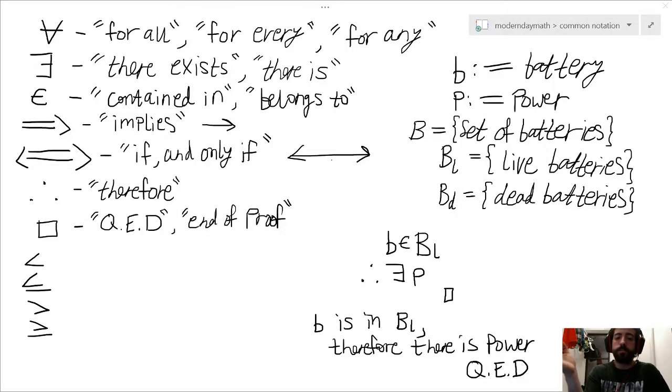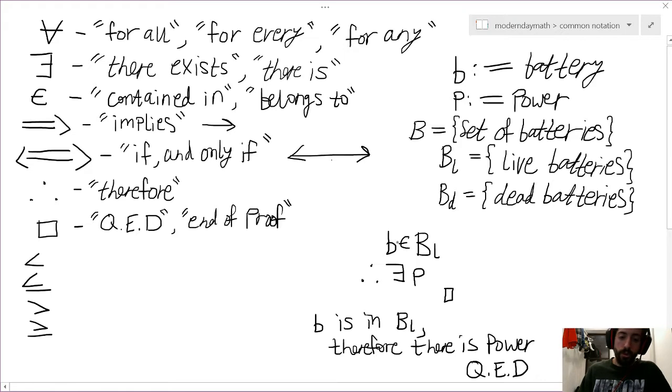Okay, so a nice symbol example using therefore and QED or end of proof would be the statement that reads: in symbols, b belongs to BL, therefore there exists p, which is the chosen battery belongs to the set of live batteries, therefore there is power. Right, there exists p power. And I wrote it down here: b is in BL, right, the chosen battery is in the set of live batteries, therefore there is power, QED. Okay, whether or not it's actually a strong argument, right, that's up for debate. We just showed what we wanted to conclude. Right, we have made our argument.